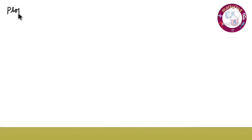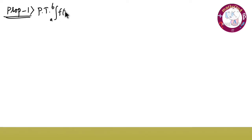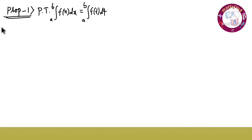Property number one of definite integrals. We have to prove that integration of a to b f of x dx is equal to integration of a to b f of t dt. To prove this, let us consider this integral as i1.